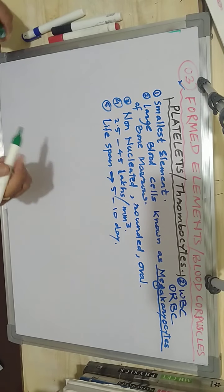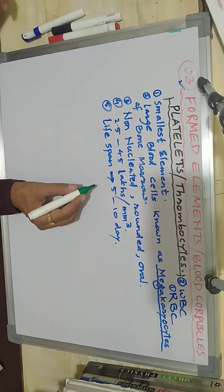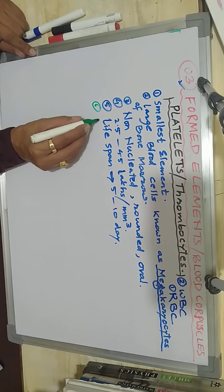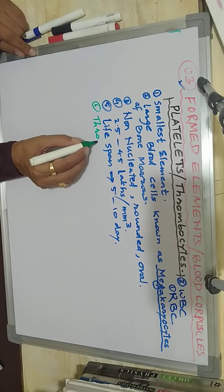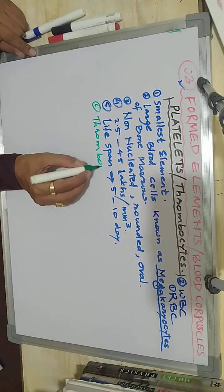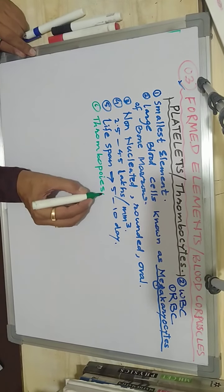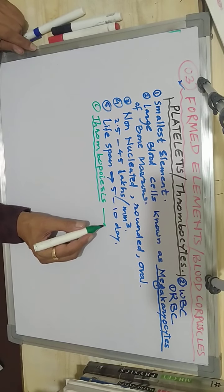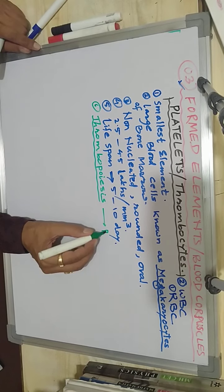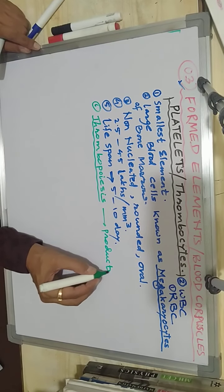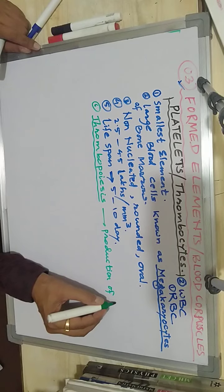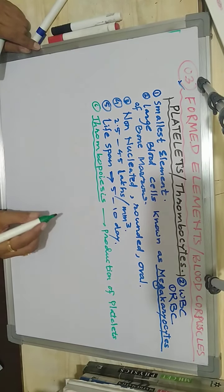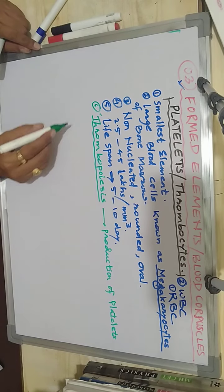The next feature is that platelets are produced by a process called thrombopoiesis. Thrombopoiesis is the biological term describing the production of platelets or thrombocytes in the body.